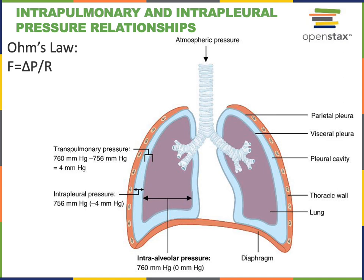Ohm's law describes the relationship between flow, pressure, and resistance. Air flows in response to the pressure difference between atmospheric pressure and intra-alveolar pressure, and the airflow rate also depends on airway resistance. Airway resistance depends on the diameter of the airways and is the opposition to airflow resulting from friction of air along the airways.